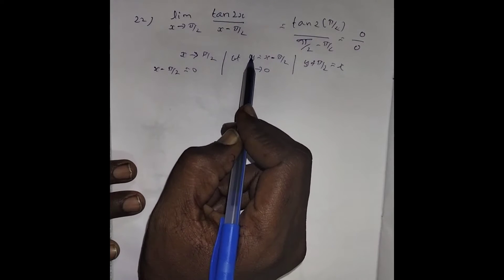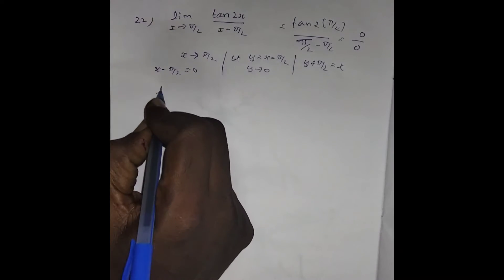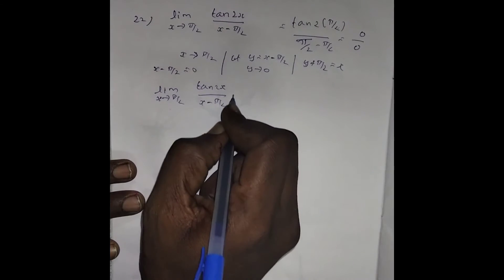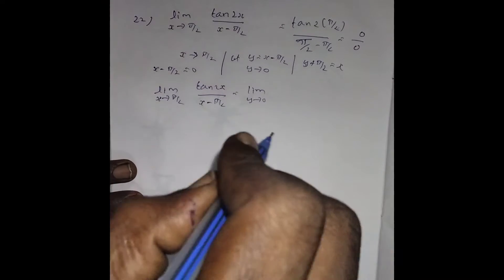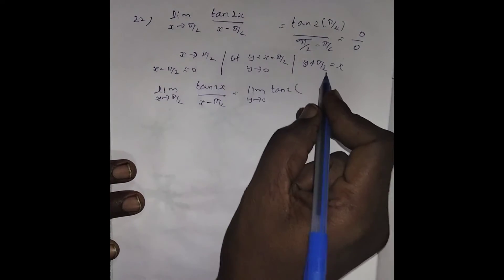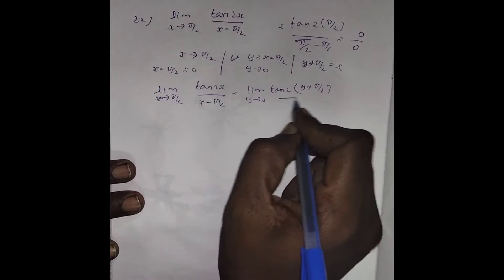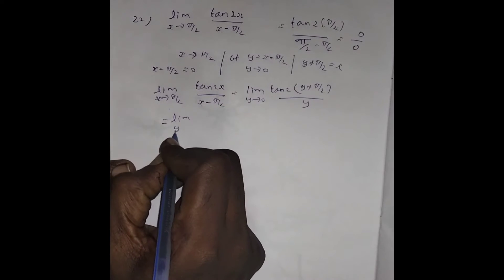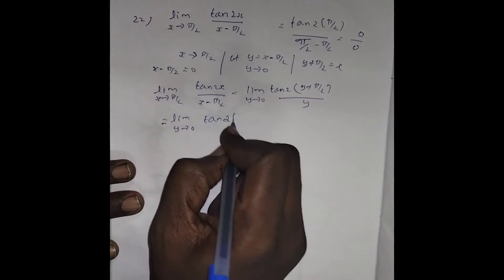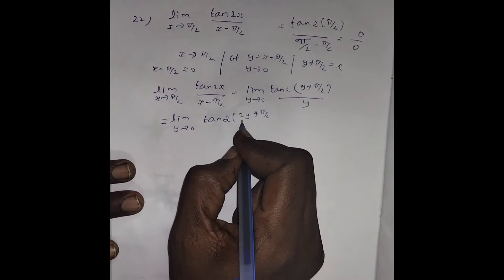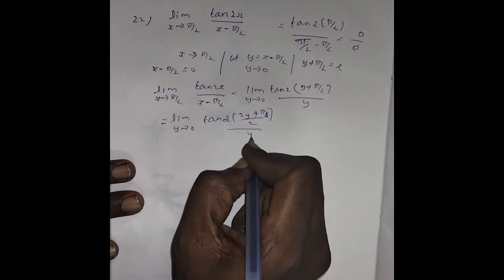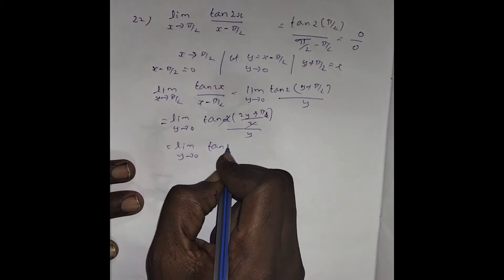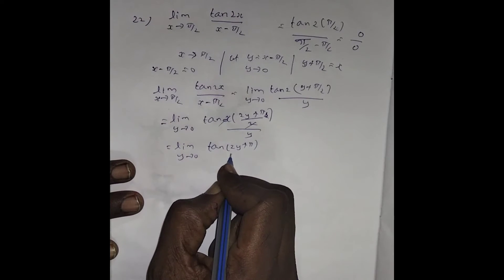Now rearranging the question: the original limit is lim(x→π/2) [tan(2x) / (x - π/2)]. It now becomes lim(y→0) [tan(2(y + π/2)) / y]. After cross-multiplying the 2 and simplifying π/2 divided by 2, we get lim(y→0) [tan(2y + π) / y].